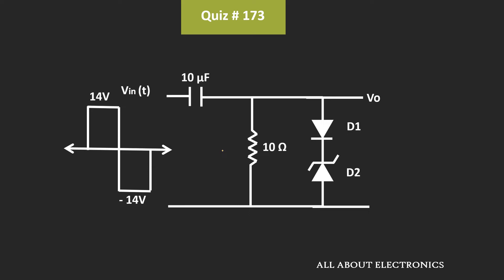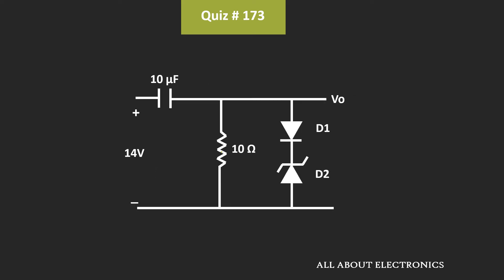First of all, let's see what happens during the positive half cycle. During the positive half cycle, these two diodes will conduct and the capacitor starts charging in this direction because these two diodes will offer the minimum resistance. So during the positive half cycle, the voltage drop across diode D1 will be equal to 0.7V and the voltage drop across diode D2 will be equal to 6.8V.